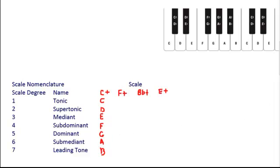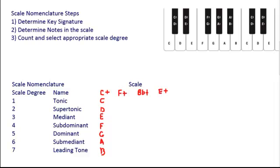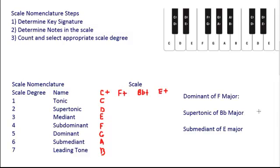So let's try a couple examples of how to determine the different scale degrees within a major scale. So here are our steps for scale nomenclature. The first step I have is to determine the key signature. So if you want to determine the dominant of F major, the first thing you have to do is determine what is the key signature of F major.